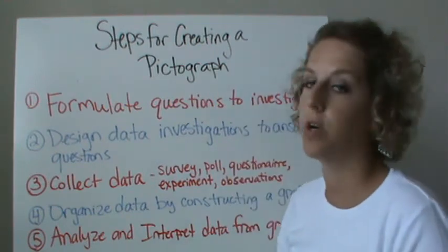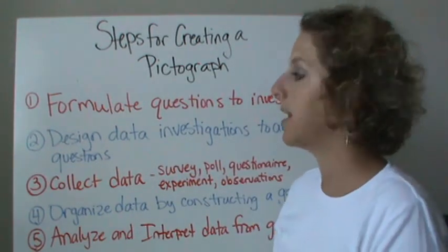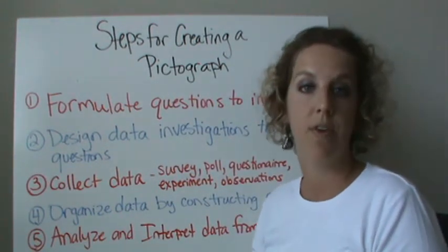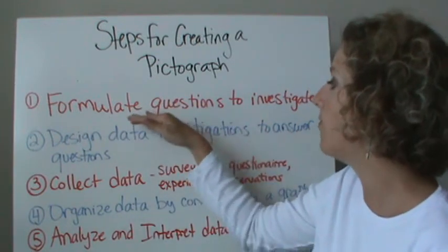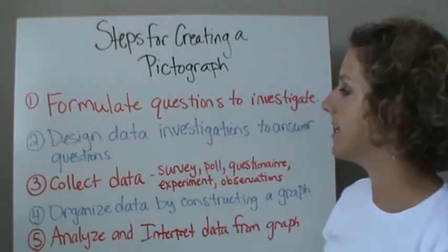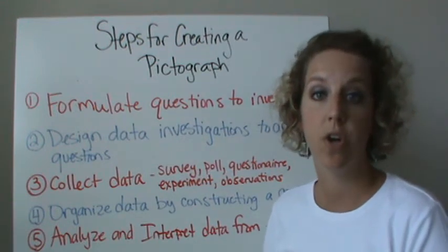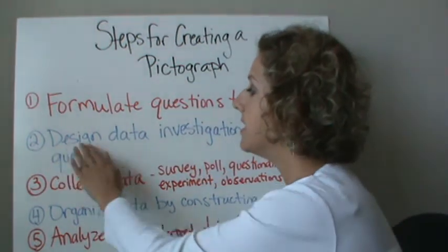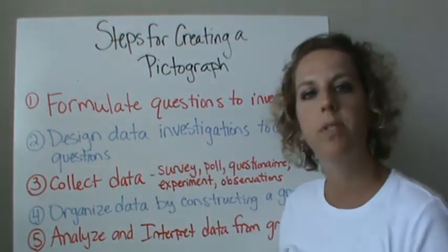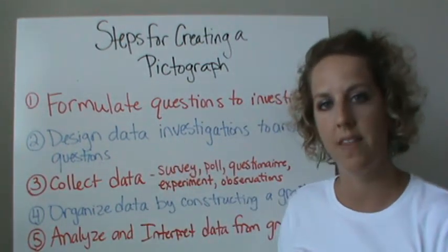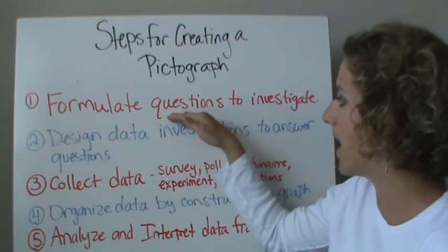There are five steps for creating a picture graph. First, you want to formulate a question or questions to investigate. After you've decided which question you're going to investigate, you can design data investigations — design the investigation to be able to answer that question.